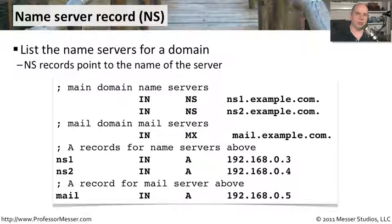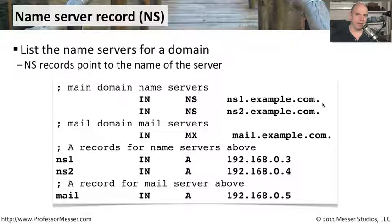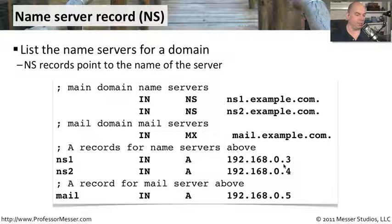If you're setting up a DNS configuration for your organization, you're probably not going to have a single DNS server — you'll likely have multiple DNS servers in your environment. The way you designate where those DNS servers are is with a name server record, abbreviated as NS. In the configuration we've been working with, you can see the NS record with ns1.example.com, and there's also a second name server record for ns2.example.com. The address records for ns1 and ns2 point directly to their IP addresses. If somebody needs to resolve a name, they first need to find the name services for your domain, and those are found in the NS record.